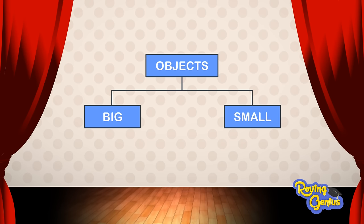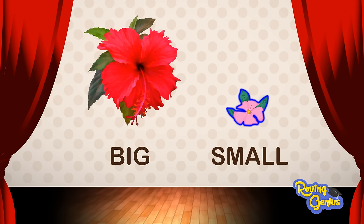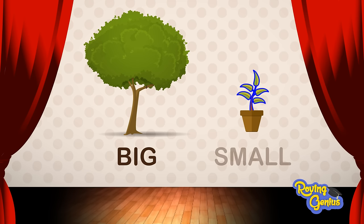When we compare objects based on their sizes, we get big and small objects. Look at these flowers. This is a big hibiscus flower, while this is a small periwinkle flower. This is a big tree. This is a small plant.